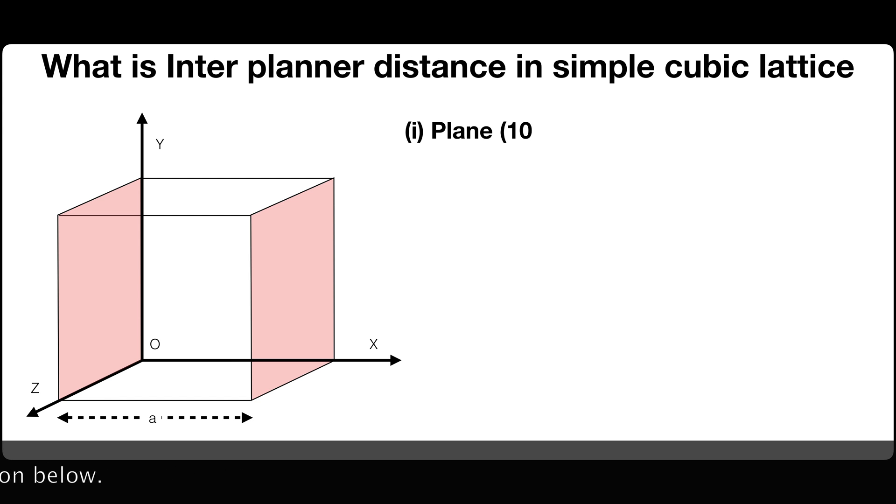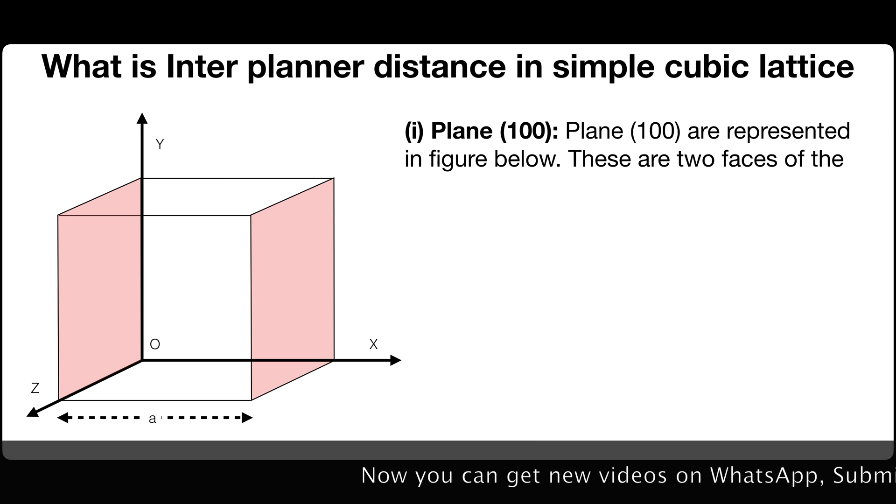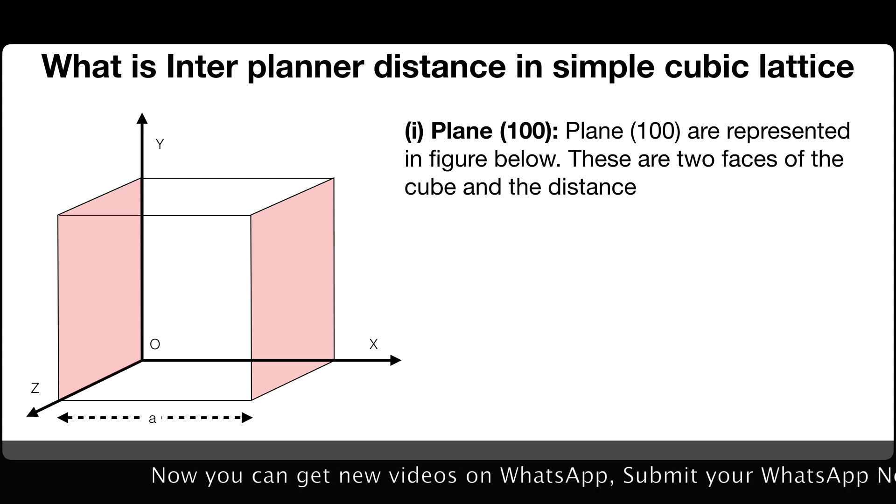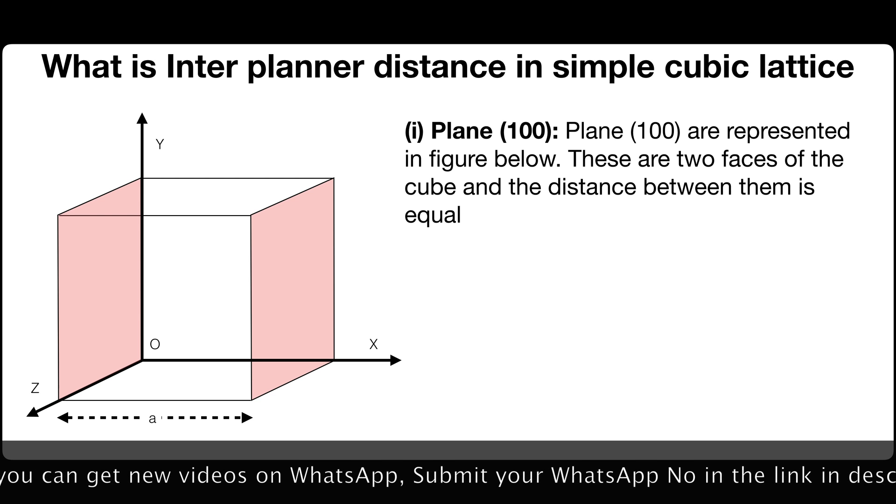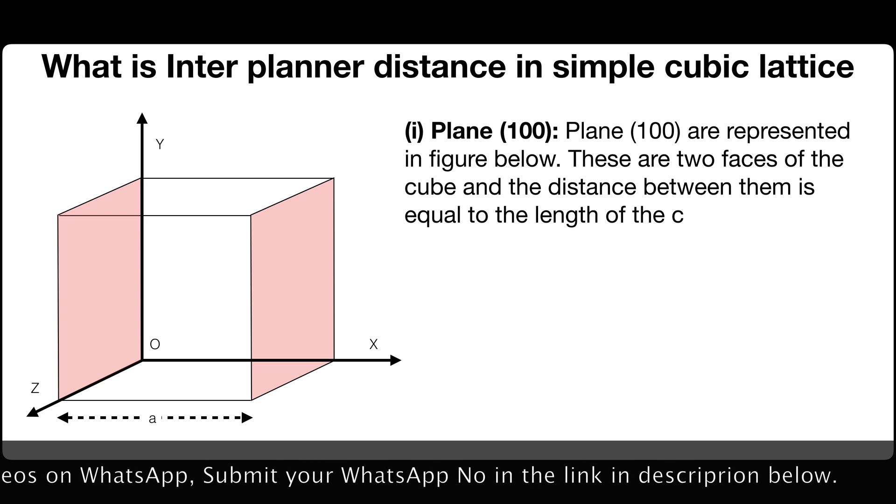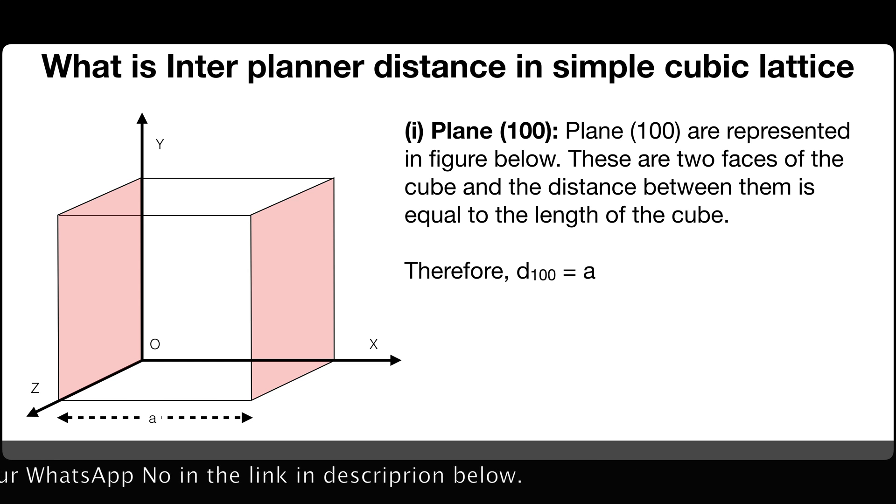First, plane 100. Plane 100 are represented in figure below. These are two faces of the cube and the distance between them is equal to the length of unit cell. Therefore, D100 is equals to A.